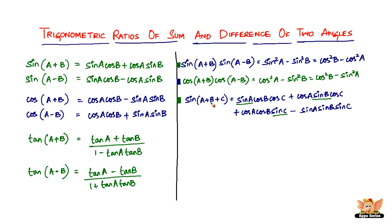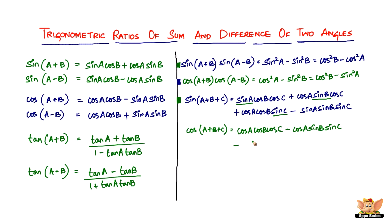Now that we have sine of A plus B plus C, here is cos of A plus B plus C. Cos of A plus B plus C equals cos A cos B cos C minus cos A sine B sine C minus sine A cos B sine C minus sine A sine B cos C.